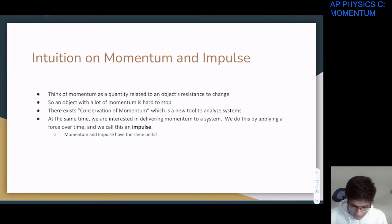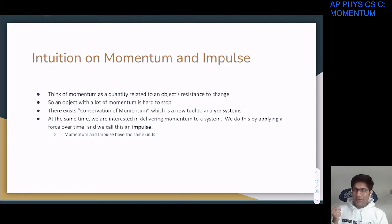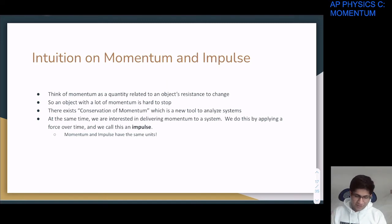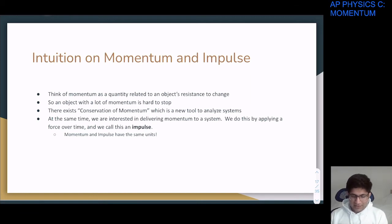To recap the intuition: momentum is m·v — a large object moving slowly is hard to change, and a small object moving very fast is also hard to change. An object with a lot of momentum is hard to stop. Conservation of momentum is our new tool, and impulse is how we deliver extra momentum to a system.